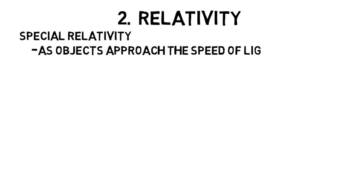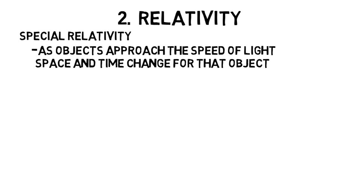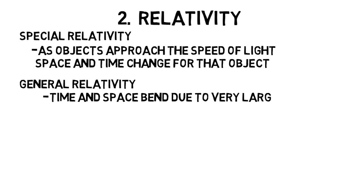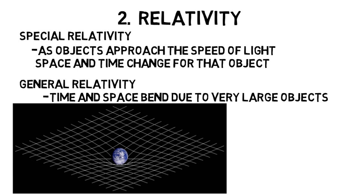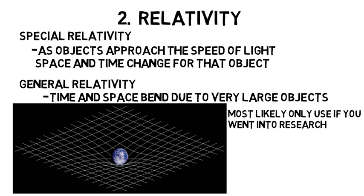Then there's relativity. You have special relativity, which proves that as objects approach the speed of light, space and time change for that object. Then general relativity says that time and space bend due to very large objects like planets all the way to black holes. This subfield you'd most likely only use if you went into research, as opposed to some tech company.